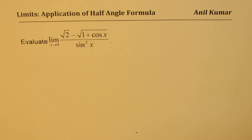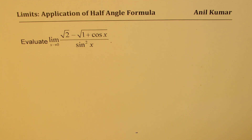I'm Anil Kumar. Welcome to my series on limits. Here is another excellent question which needs special attention. We'll evaluate the limit when x approaches 0 for square root of 2 minus square root of 1 plus cos x, divided by sine square x. In my set of videos you'll find some very typical examples — if you do them you should be doing well in your test.